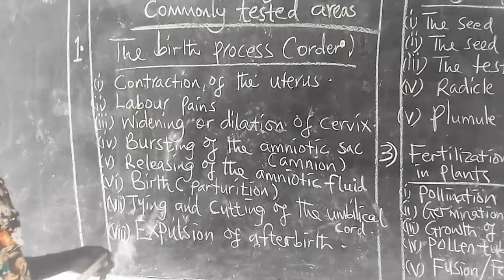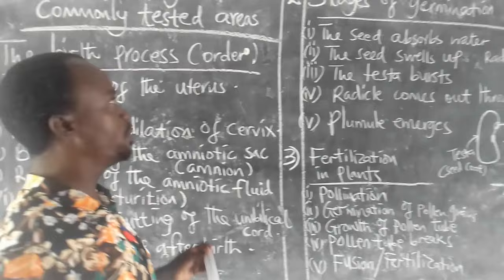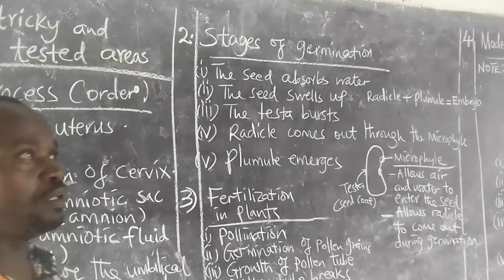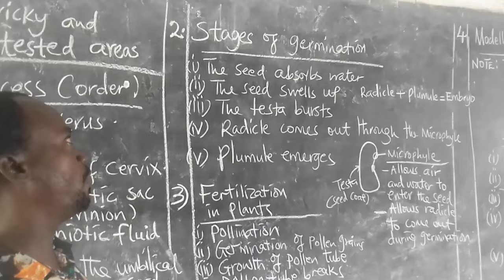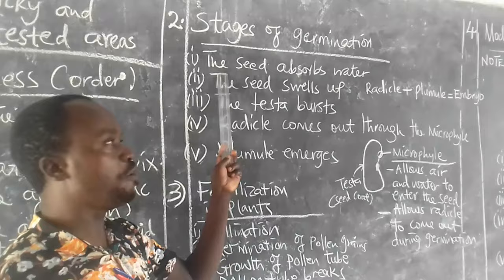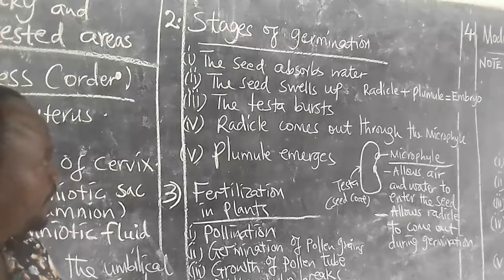Number 2: stages of germination. Order of germination. The following are the stages followed: the seed absorbs the water, the seed swells up.